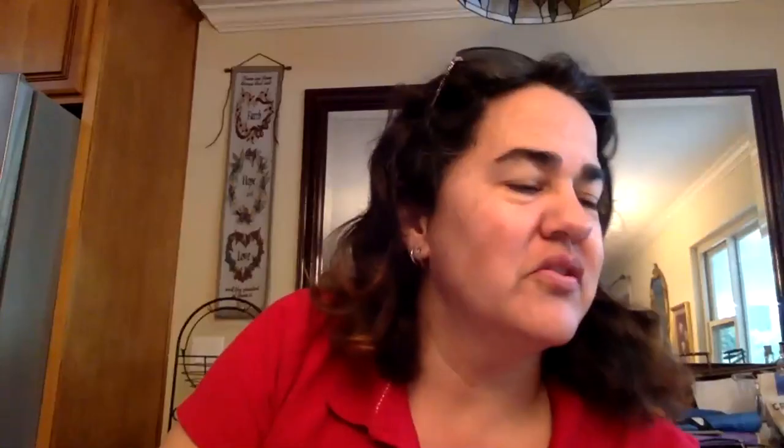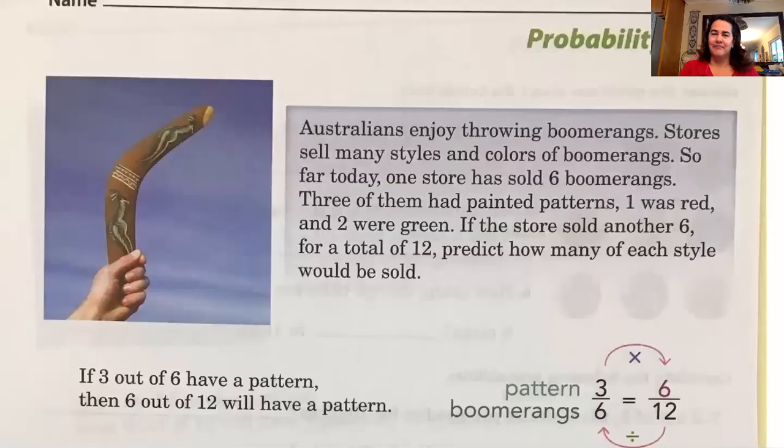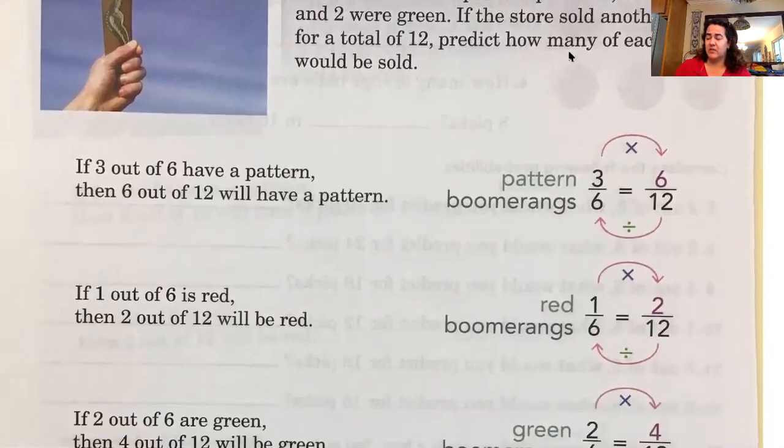And we're going to go ahead and take a look at your paper. Get it in front of you. Okay, we're on page 299 and I'll get mine out. Here we are, second graders. Probability. Let's read the blue box at the top of the page. It says, Australians enjoy throwing boomerangs. Stores sell many styles and colors of boomerangs. So far today, one store has sold six boomerangs. Three of them had painted patterns. One was red and two were green. If the store sold another six for a total of 12, predict how many of each style would be sold.